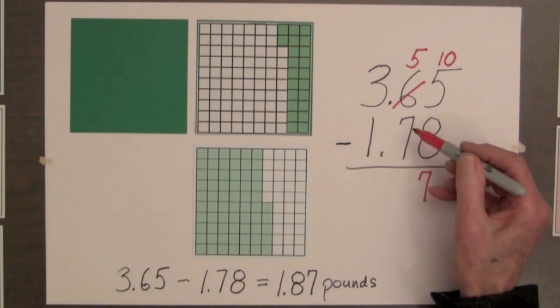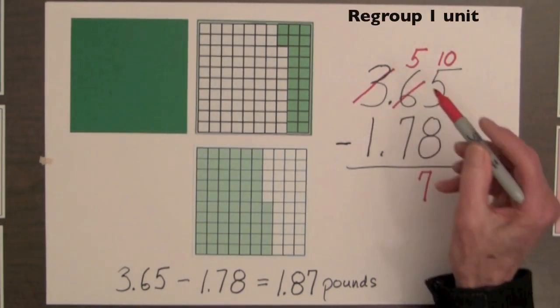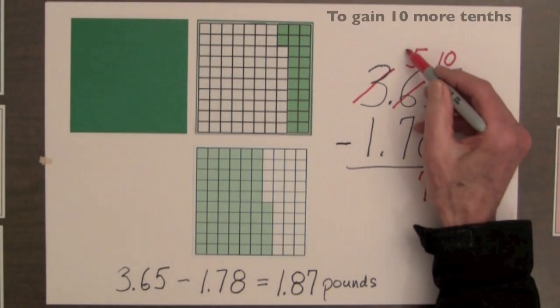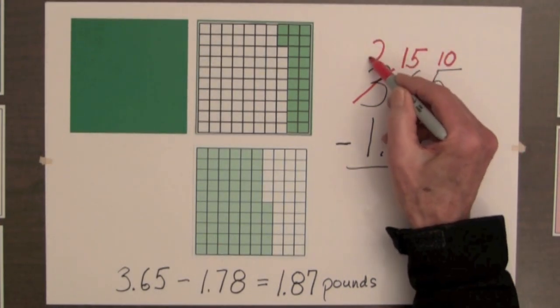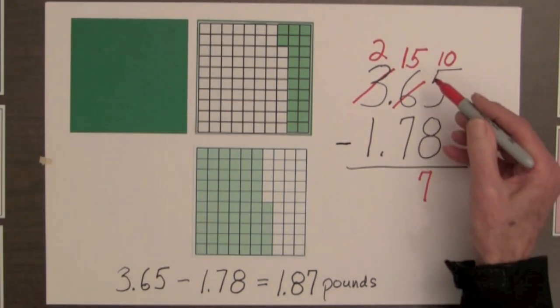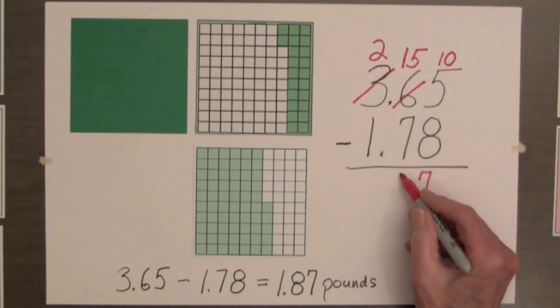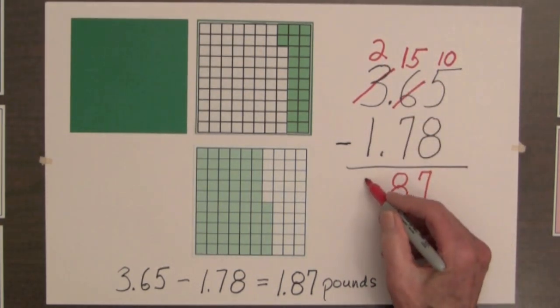Then we need to subtract 7 tenths, but we only have 5 tenths. So we regroup 1 unit to gain 10 more tenths. And this leaves us with 2 units in the units column. 15 tenths minus 7 tenths is 8 tenths. And 2 minus 1 is 1.